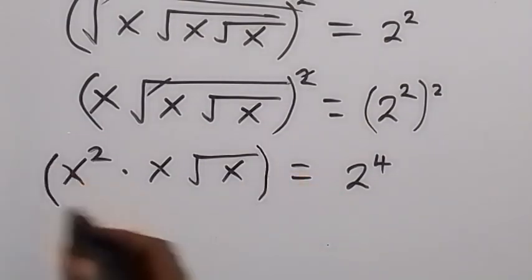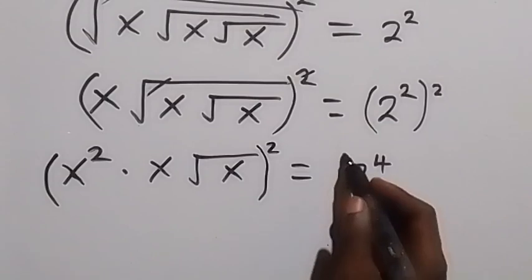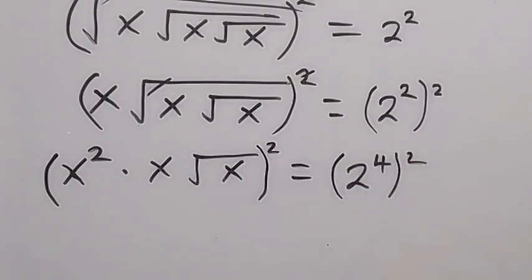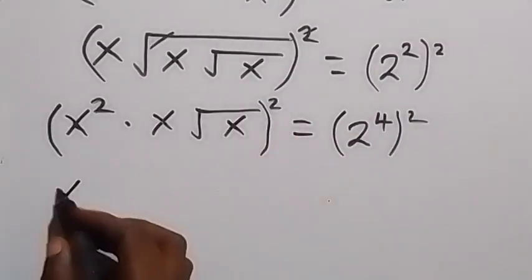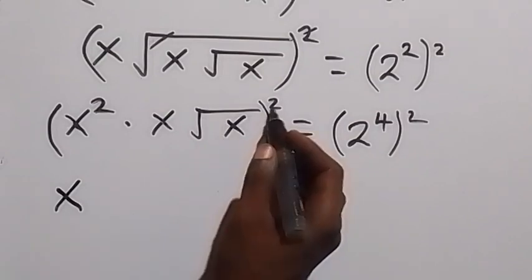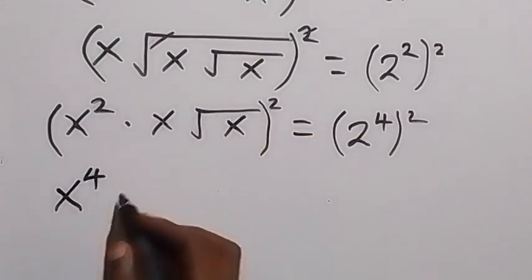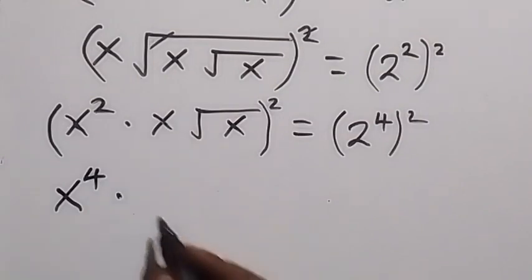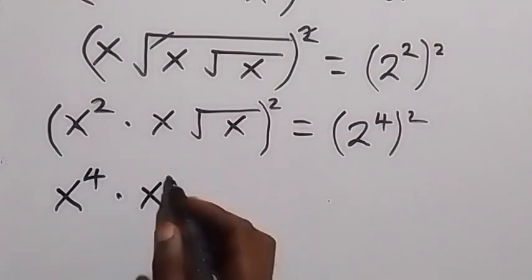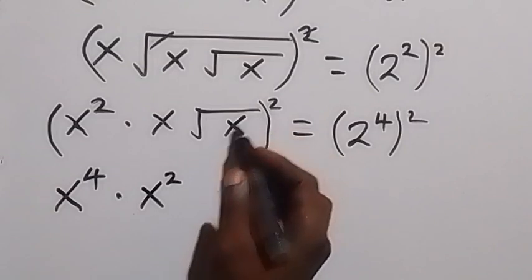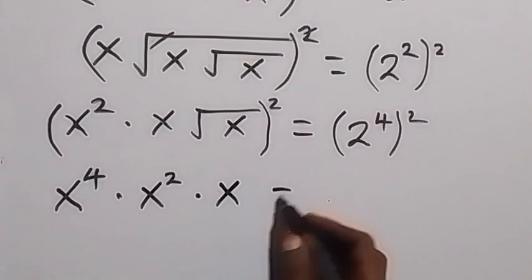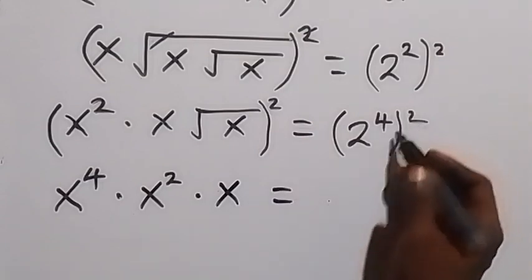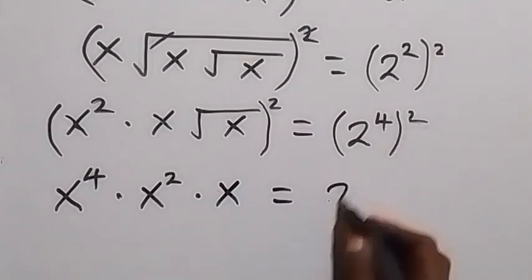We repeat the process and square both sides again. This square affects all the numbers inside: we have x squared, then x squared again gives x raised to power 4, then it affects x here giving x squared, then it affects root x — the square cancels the square root — giving x. The right side becomes 2 raised to power 8.